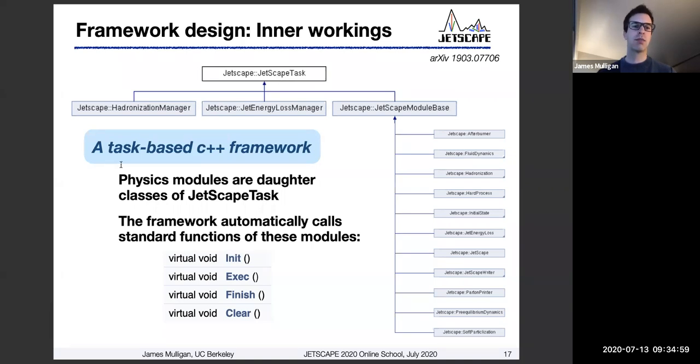When we say task-based framework, what we really mean is that the framework, this Jetscape task essentially, will automatically call some standard functions from all of the modules that are defined. So when you define a physics module, it implements only these specific functions that the framework will call. These are functions like init or exec, which gets executed every event, or finish, and so on.